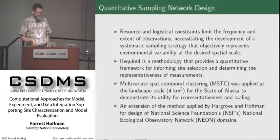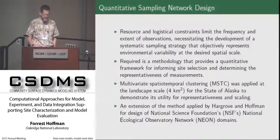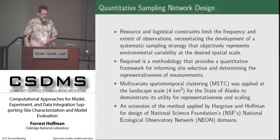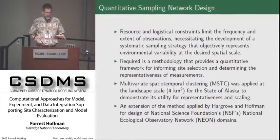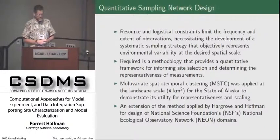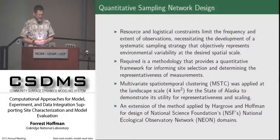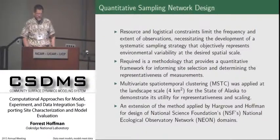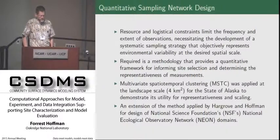This requires some methods for upscaling and downscaling — how do we take measurements at one scale and make them useful at another scale. There are a lot of constraints in environments like the Arctic and the tropics where it's difficult, expensive, or potentially dangerous to go make measurements. So we really need some systematic and objective way of representing the environmental variability that we know is out there at the desired spatial scales, and a method for providing some quantitative framework to help us make site selections and determine the representativeness of our measurements.